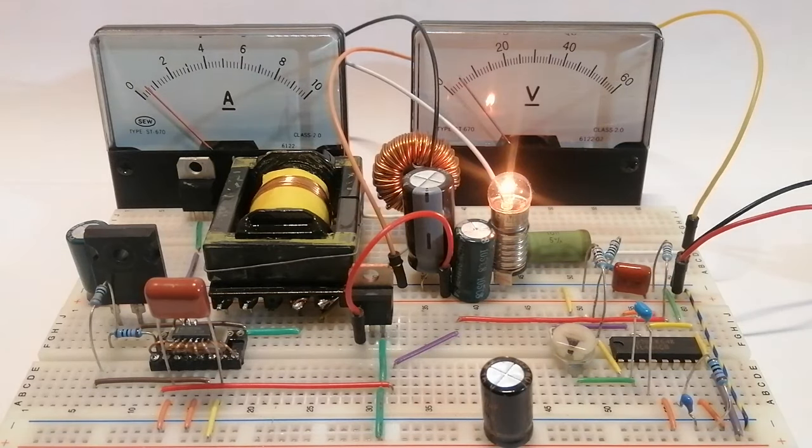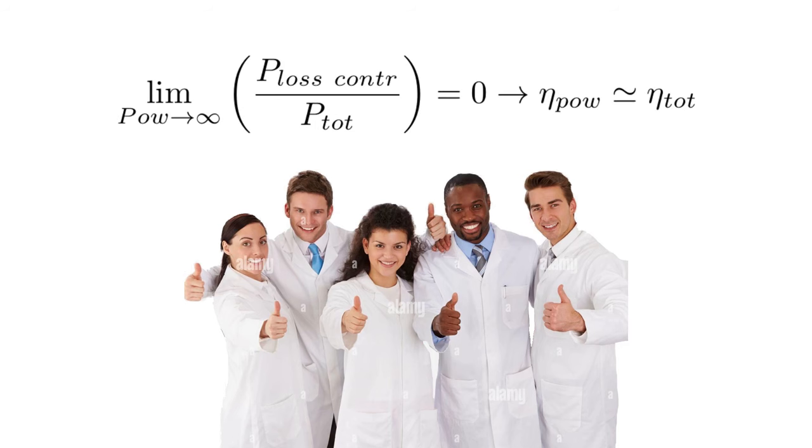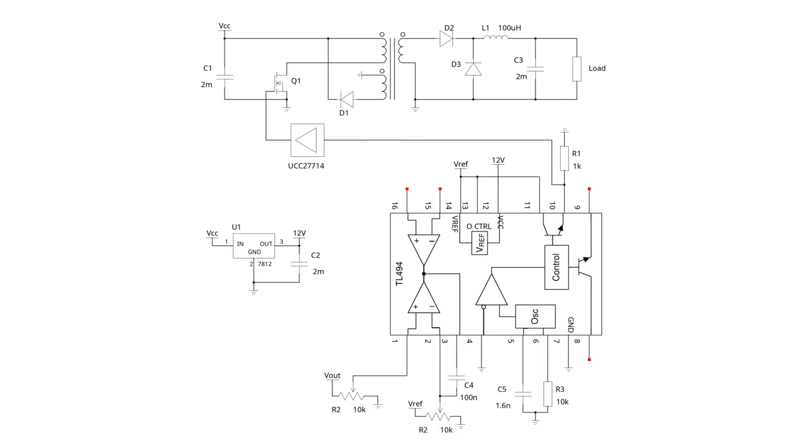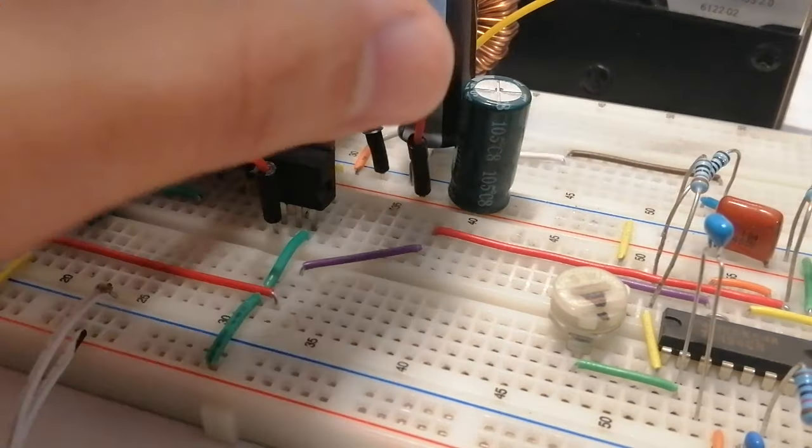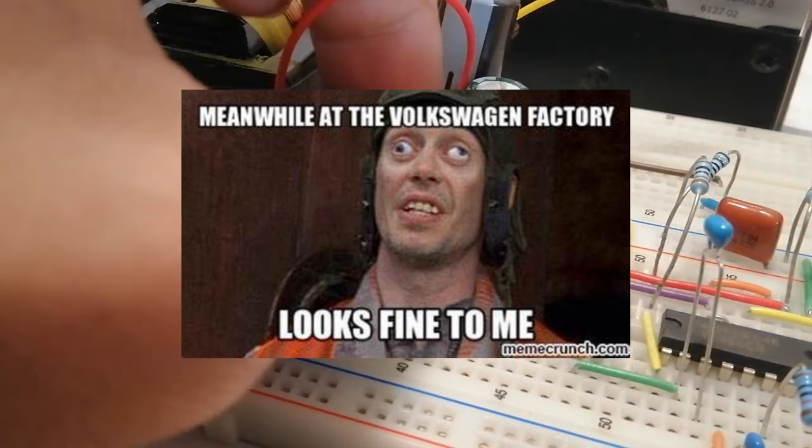So if we can actually improve the system let's just change the way we measure it and then we can justify this with a scientific looking formula that makes it sound real. So what I'm going to do is measure the efficiency of just the power circuit without the control circuit. So I'm going to power the control circuit with a different power supply so we can just measure what the losses are in our power circuit.